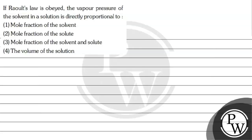Hello Bacho, let's read this question. The question says, if Raoult's law is obeyed, the vapor pressure of the solvent in a solution is directly proportional to: option 1, mole fraction of the solvent; option 2, mole fraction of the solute; option 3, mole fraction of the solvent and solute; option 4, the volume of solution.